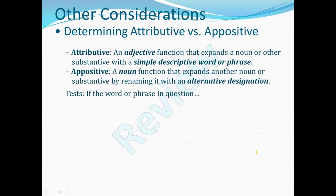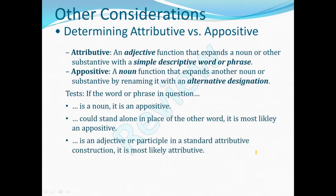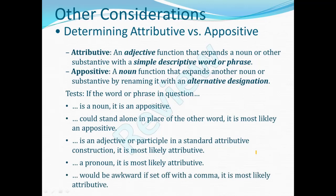There are tests we can apply to determine which it is. If the word in question is a noun, it must be an appositive because Greek nouns are not used as adjectives. If the word could stand alone in place of the other word, it is most likely an appositive — 'the apostle' could almost always stand in place of the word 'Paul.' If the word is an adjective or participle in a standard attributive construction, that is most likely its use. If it's a pronoun, it is most likely attributive — though personal pronouns won't typically be used this way; demonstrative, interrogative, and indefinite pronouns are often used with an adjectival function. If the word would be awkward if set off with a comma, it's probably attributive: you wouldn't put a comma between 'large' and 'tree,' but a comma between 'Paul' and 'the apostle' would seem quite natural.